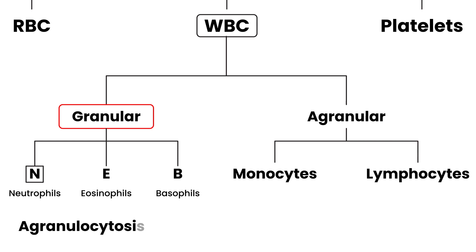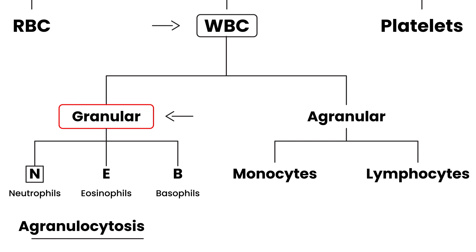Agranulocytosis — let's break this down. Granulocytosis refers to an increase in granulocytes. When you put 'A' in front of it, it means the opposite — just as the term asplenia means you don't have a spleen. So agranulocytosis refers to a decrease in white blood cells, and in particular, the class of white blood cells known as neutrophils.